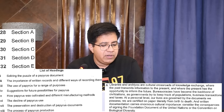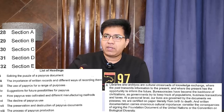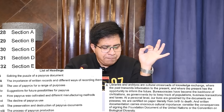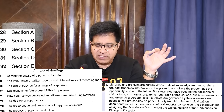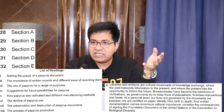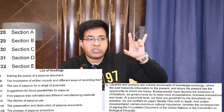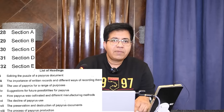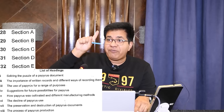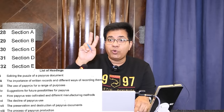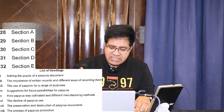Which heading is appropriate? Heading number two: 'Importance of Written Records and Different Ways of Recording Them.' For that he said 'at personal level our lives are governed by documents' and then talked about birth certificate, death certificate, etc. Correct answer for question 28, section A, is heading number two. Cross heading number two so you don't use it again. If you use a wrong heading twice, you get two wrong answers — so be extra careful.